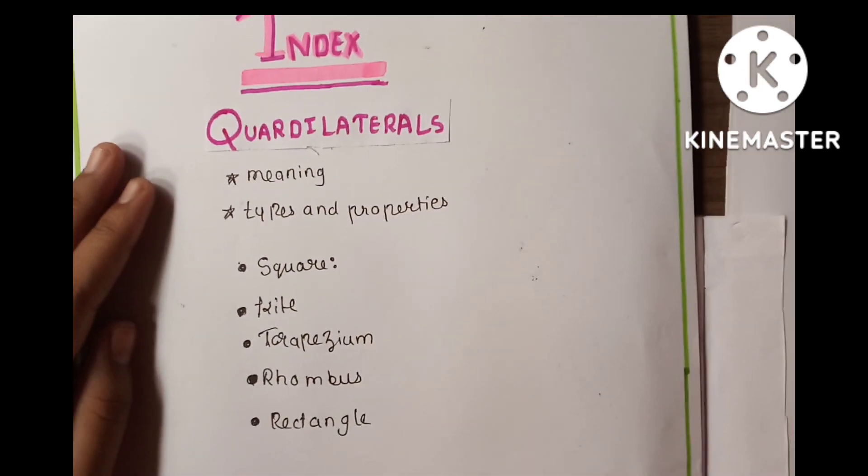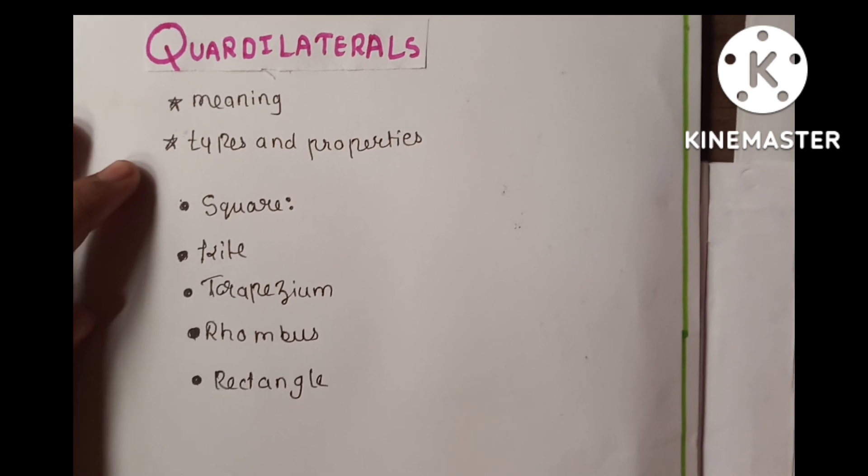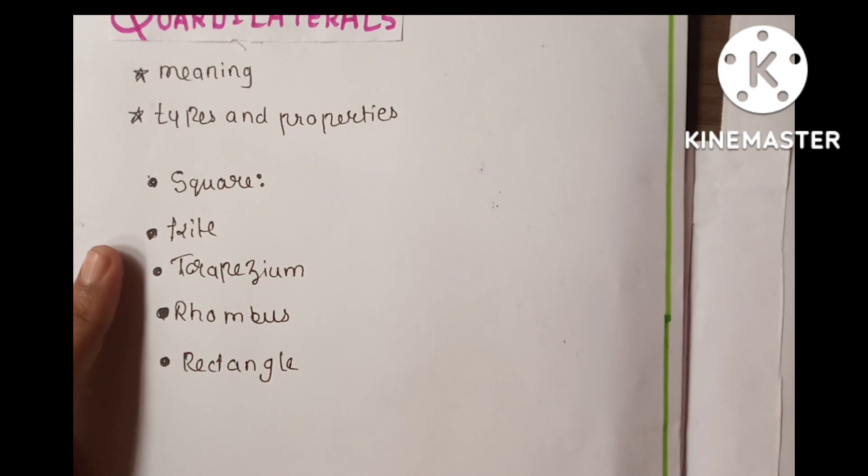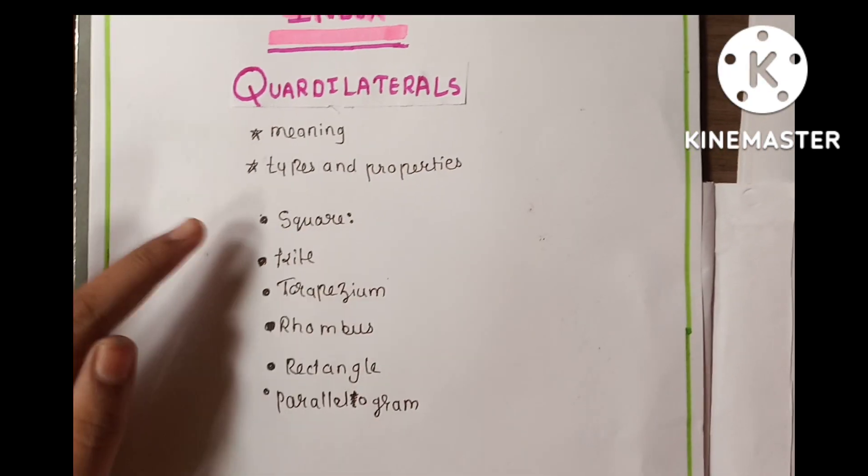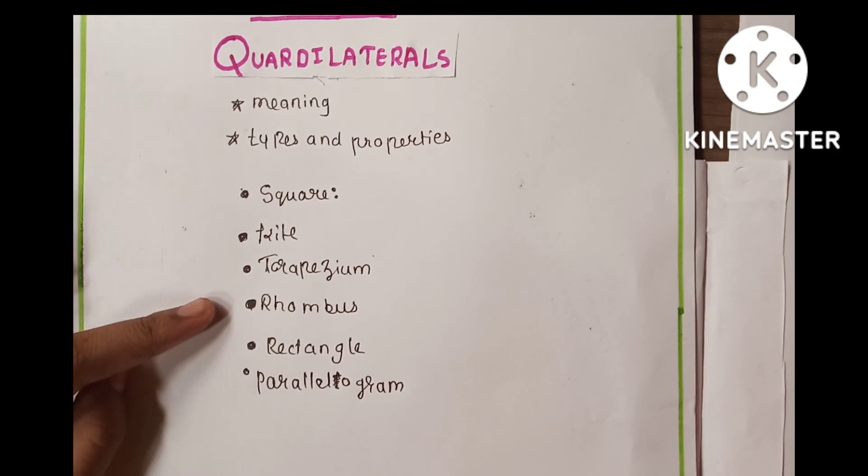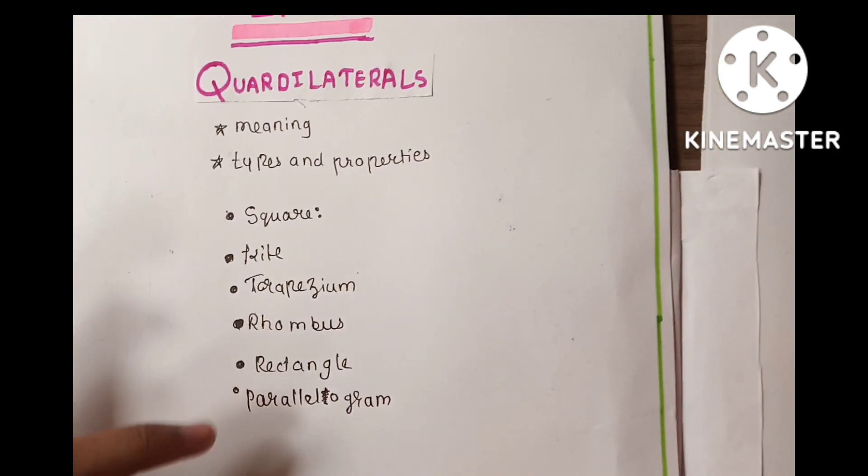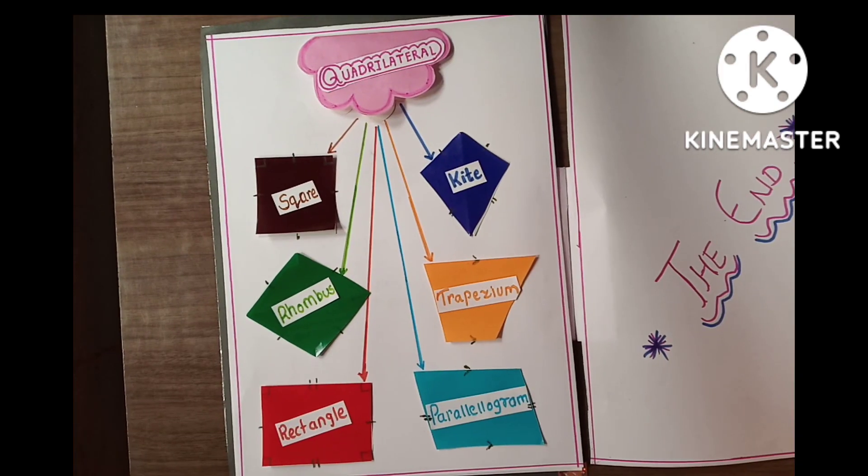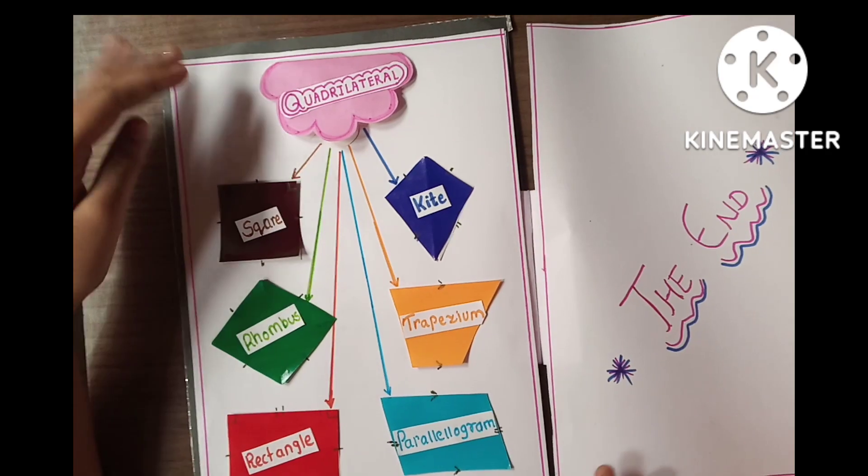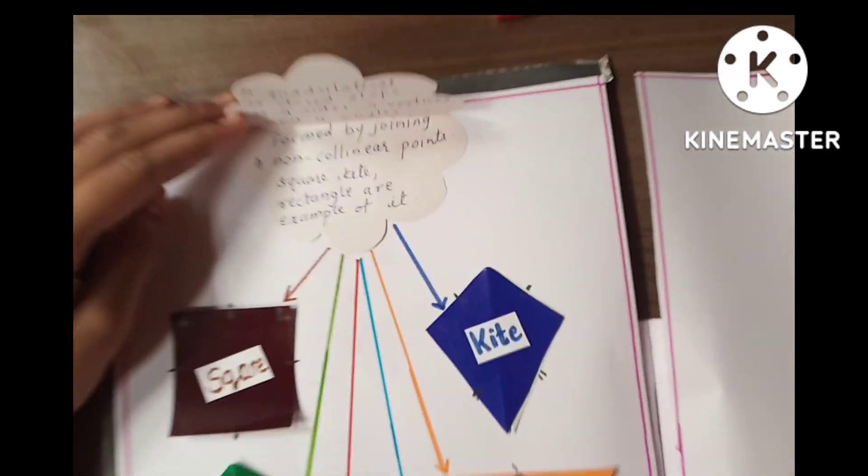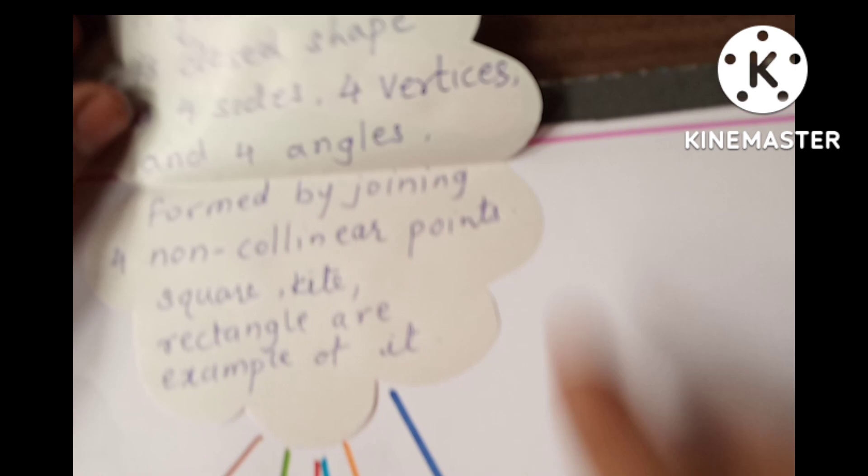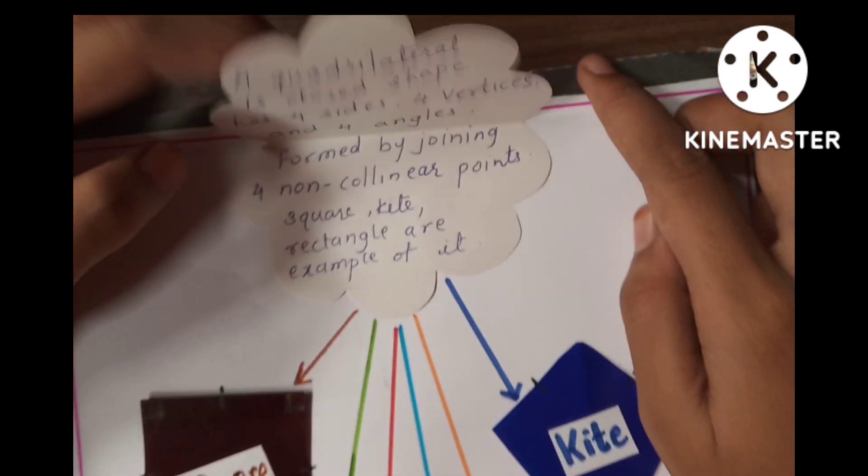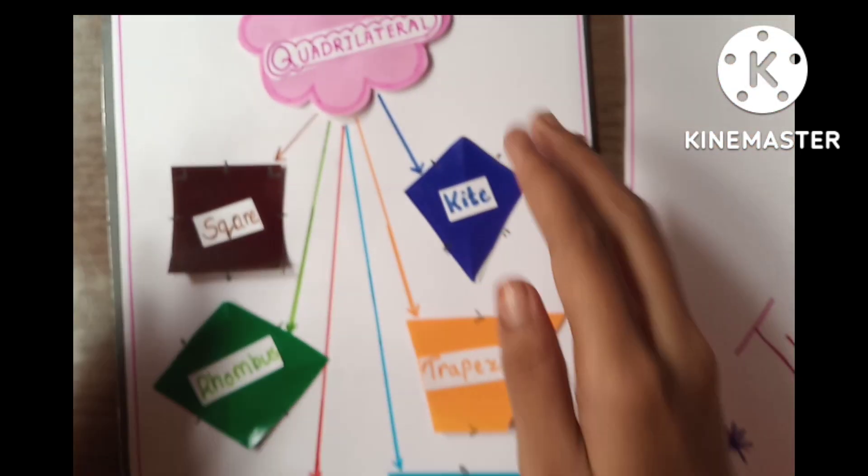Quadrilaterals, meaning and its types and properties. First one is square. Second one is kite. Square, kite, trapezium, rhombus, rectangle and parallelogram. Here is the quadrilateral. Here is its information. Here is the quadrilateral. Here are its types.